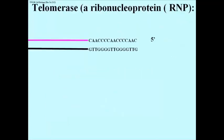Obviously, chromosomal DNA does not shorten after each generation in normal cells, and so here's what happens. The nucleus produces an RNA protein complex — or ribonucleoprotein structure — during replication called telomerase.